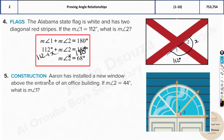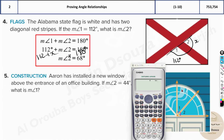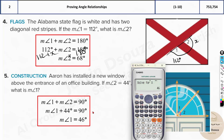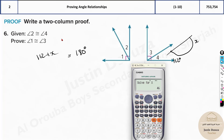The next question is about construction: Aaron has installed a new window above the entrance of an office building. The measure of the second angle is 44 degrees — what is the first one? The total is 90 degrees, so x plus 44 equals 90. Press shift and solve — the answer is 46 degrees.